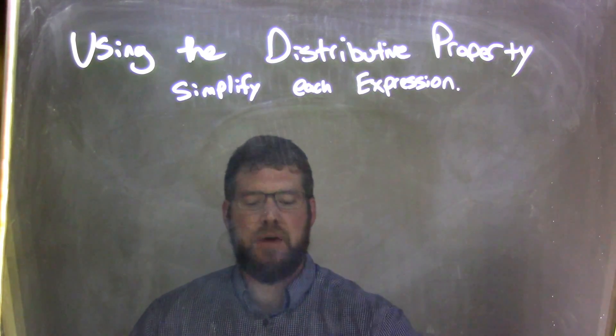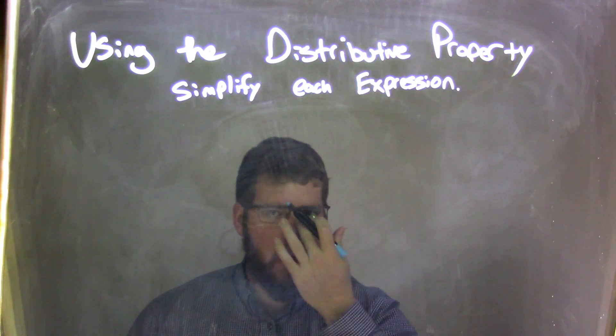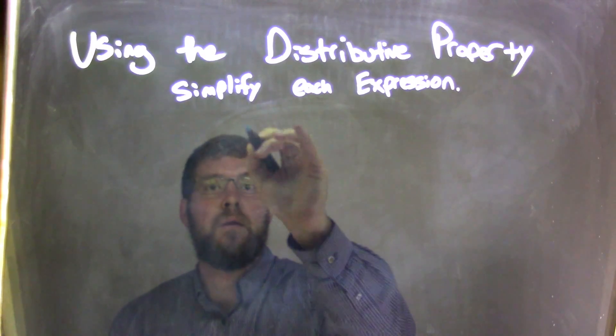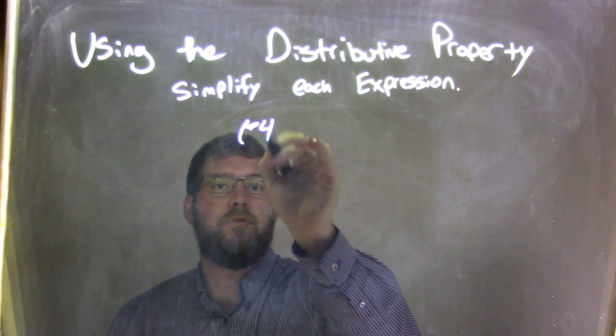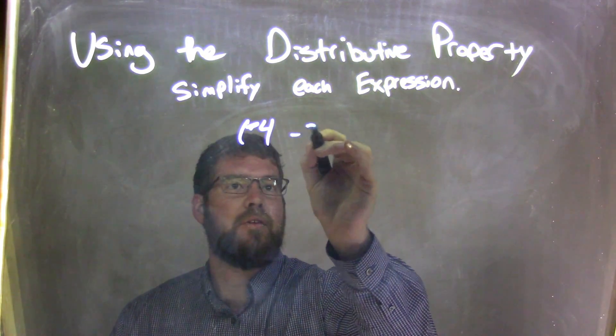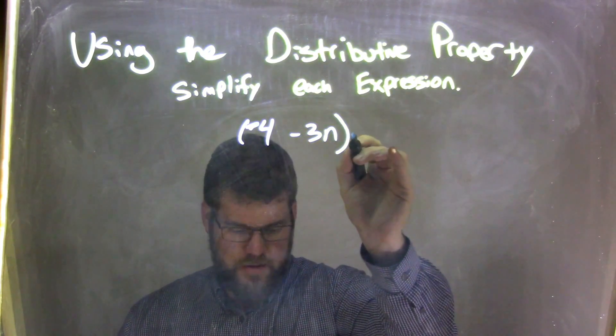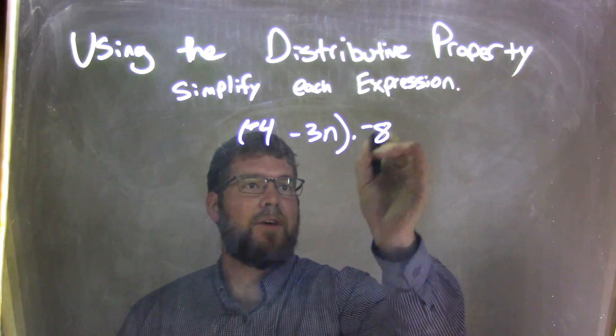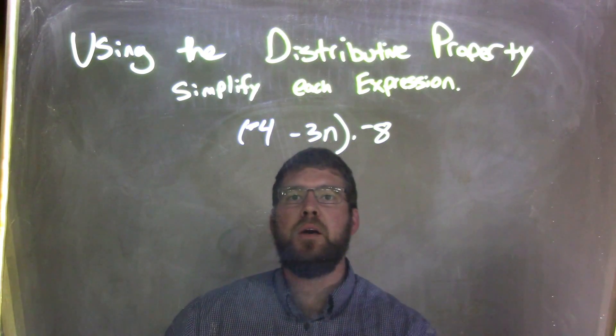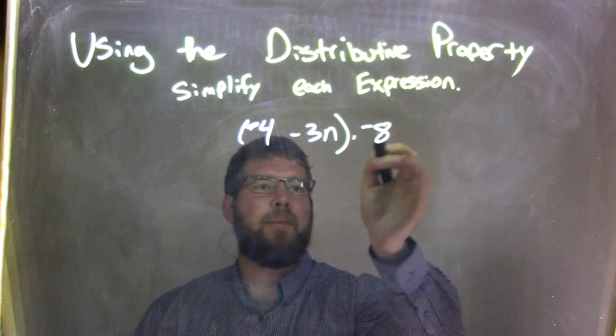We want to simplify each expression. So if I was given this expression, negative 4 minus 3n times a negative 8.